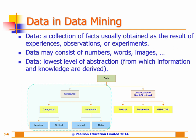Categorical data can be further subdivided into nominal or ordinal, whereas numeric data can be subdivided into interval or ratio. Nominal data contains measurements of simple codes assigned to objects as labels, represented with either binomial values — having only two possible values such as yes/no, true/false, or good/bad — or multinomial values with three or more possible values, such as marital status: single, married, or divorced.